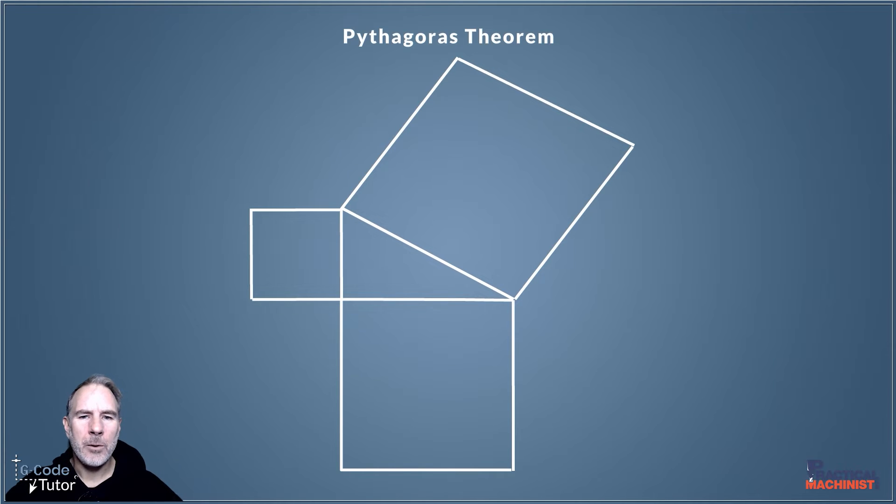If we fill the adjacent side with a green color and the opposite side with a blue color, and then we pour those two colors into the square of the hypotenuse, you can see here that it both equally fills that square. So that's the theory behind Pythagoras.